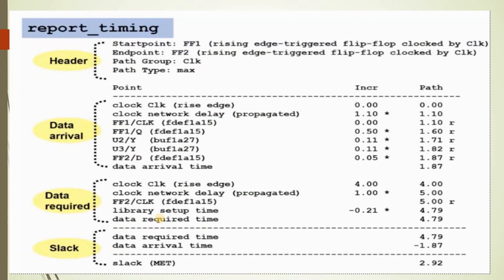The general format of a static timing analysis report consists of various stages: the header, data arrival, data required, and slack. Slack must be a positive value to meet design constraints. Slack is calculated as required arrival time minus arrival time — the difference gives the slack value. If slack is positive, the timing constraint is met.